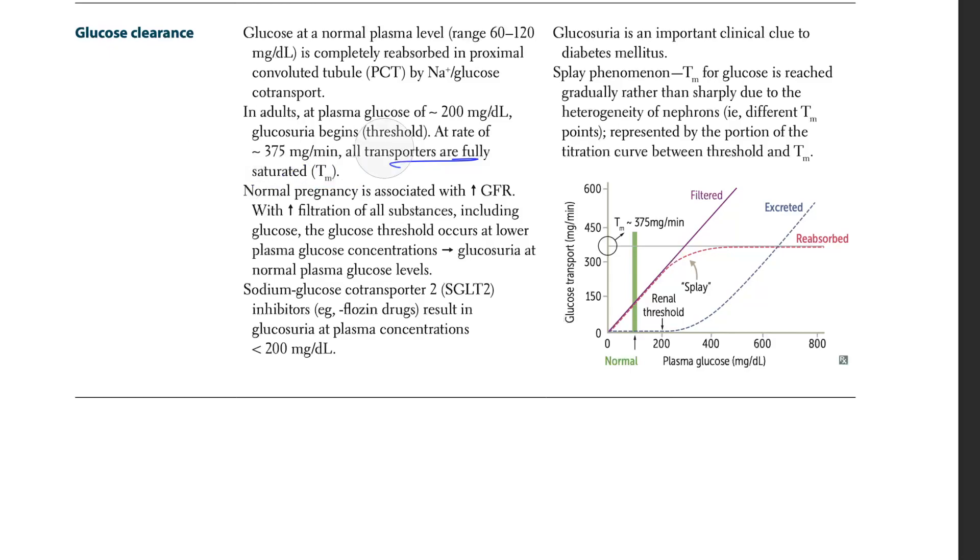Normal pregnancy is associated with increase in GFR, which is normal, with increase in filtration of all substances including glucose. The glucose threshold occurs at a lower plasma concentration, leading to glucosuria at normal plasma glucose levels.